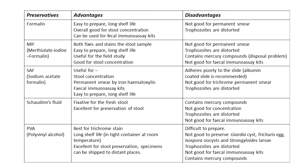Advantages and disadvantages of common preservatives: Formaline — easy to prepare, long shelf life, can perform concentration technique and immunoassay. Disadvantage: cannot do permanent smear, and trophozoites are destroyed. MIF preservative — easy to prepare, long shelf life, used for field studies, can do concentration technique. Disadvantages: cannot do permanent stain, trophozoites are destroyed, contains mercury causing disposal problems, and cannot do immunoassay.